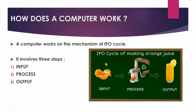See the image. This is the IPO cycle of making orange juice. The input is a number of oranges, the process is a juicer with the help of which we are processing the juice, and the output is the processed juice. This is the final result of the mechanism.